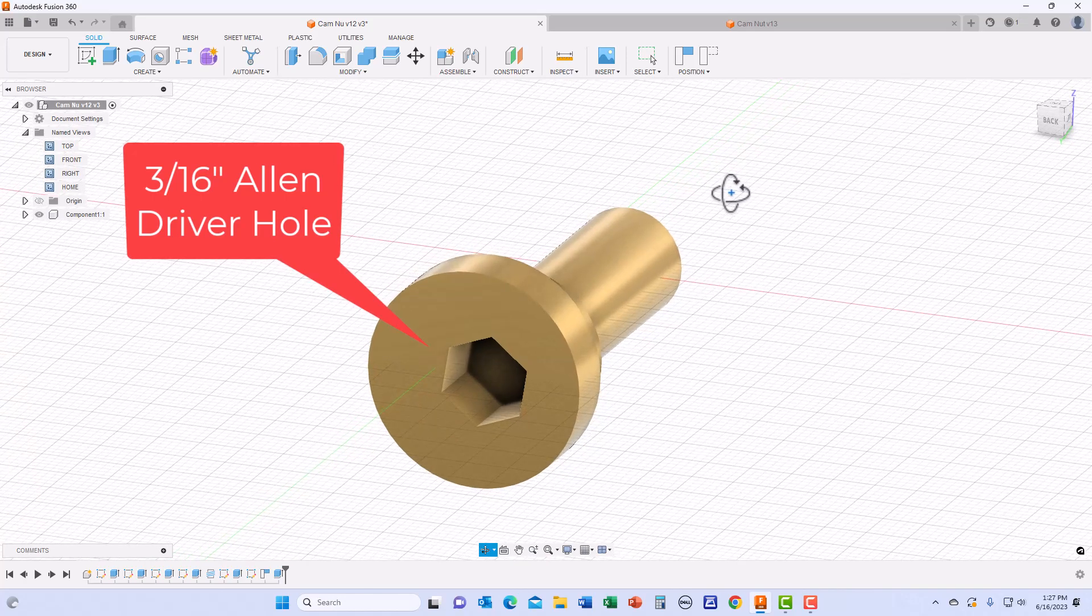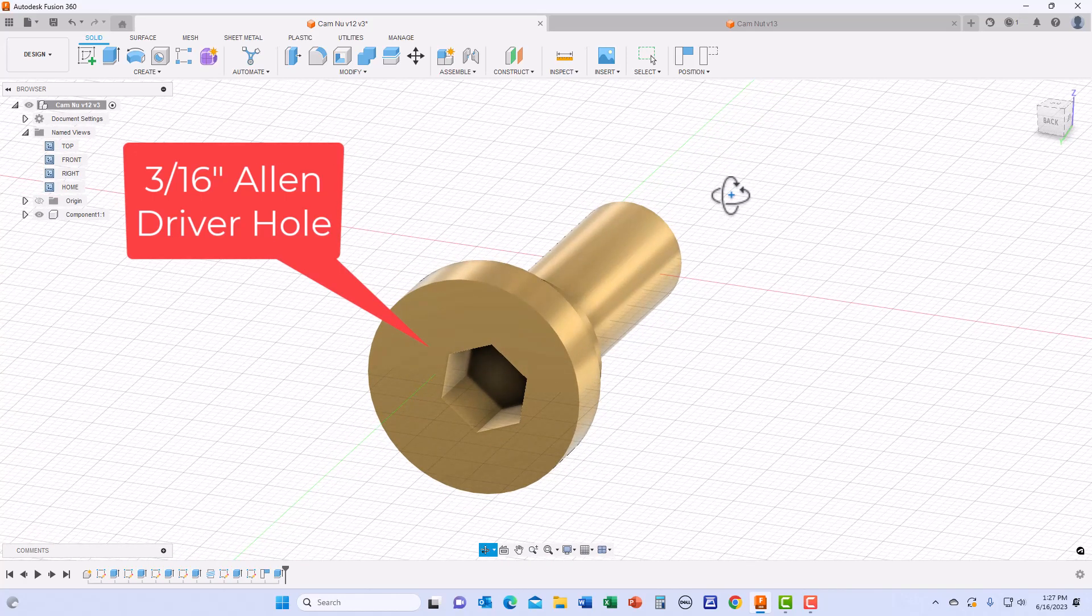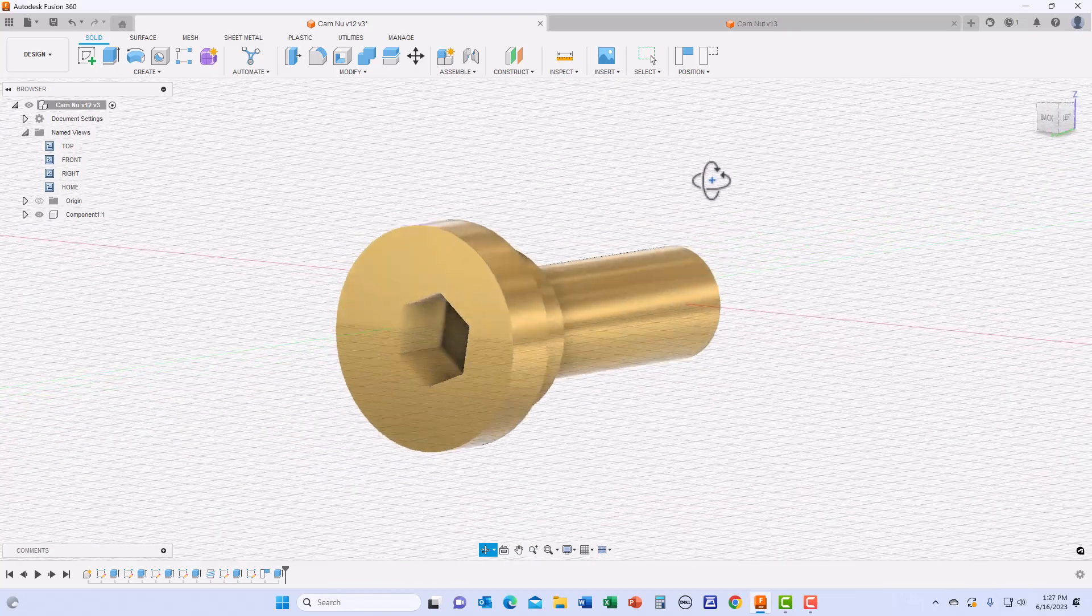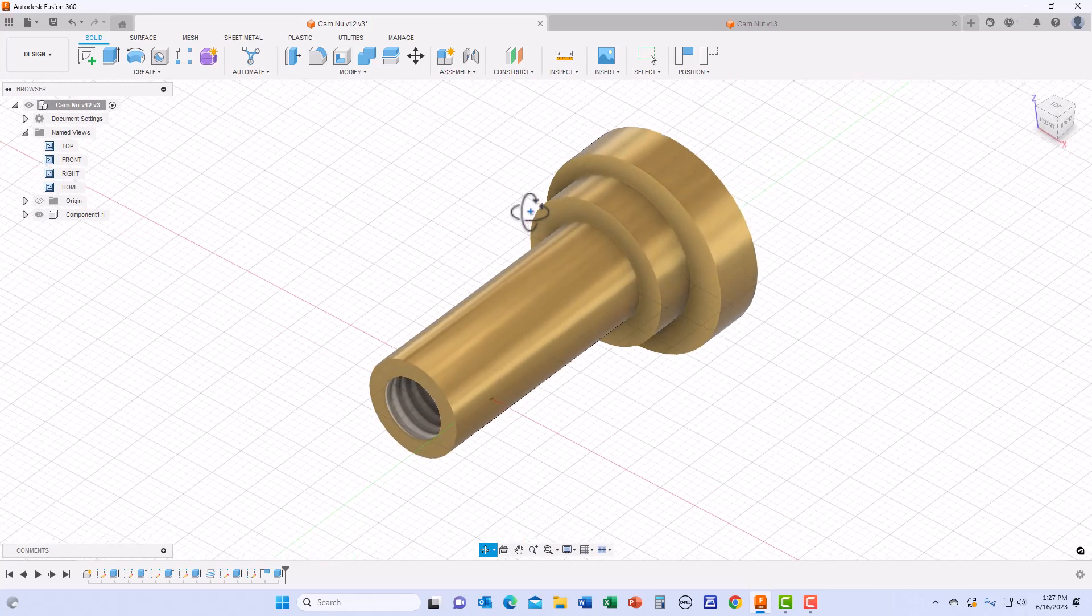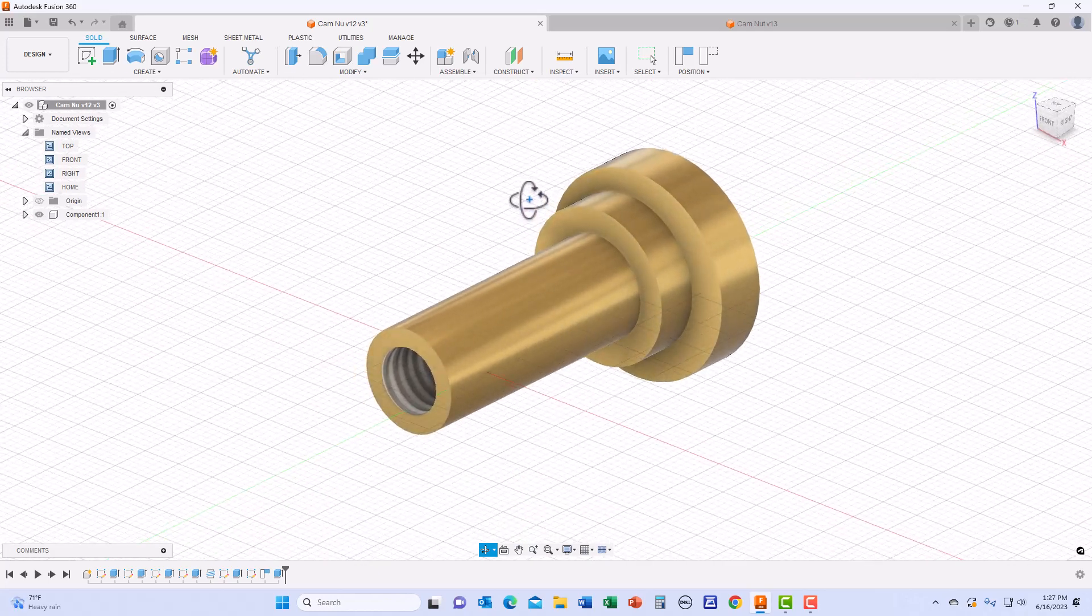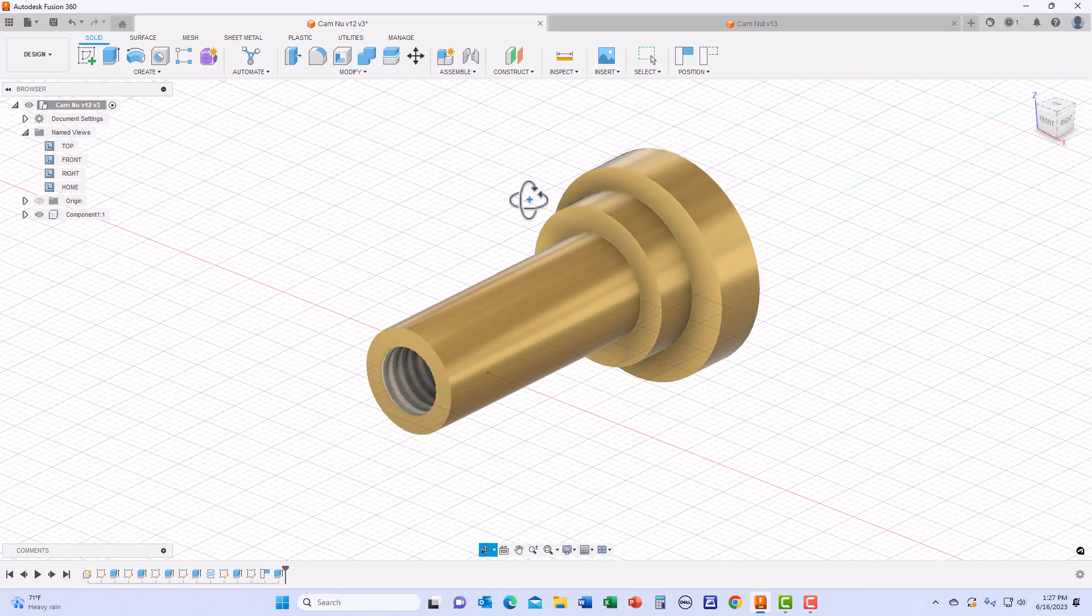This right side of the cam nut will be machined on the CNC mill. The CNC mill will enable the offset machining of the flange and also enable the drilling of the hex hole on its face. For this video, we will only be developing the G-code for the machining of the left side of the cam nut on the Tormac 8L lathe as shown in this drawing.